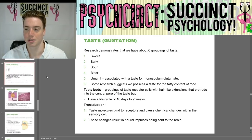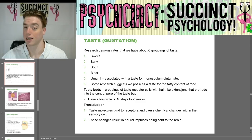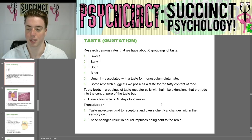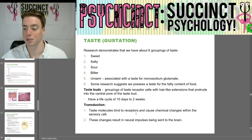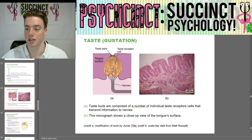Moving on to taste, or gustation. Research demonstrates we have about six groupings of taste: sweet, salty, sour, bitter, umami — associated with a taste for monosodium glutamate — and a sixth that some research suggests relates to the fatty content of food. Taste buds are groupings of taste receptor cells with hair-like extensions that protrude into the central core of the taste bud, and they have a half-life cycle of 10 days to two weeks. For transduction of taste, molecules bind to receptors and cause chemical changes within the sensory cell, resulting in neural impulses being sent to the brain.